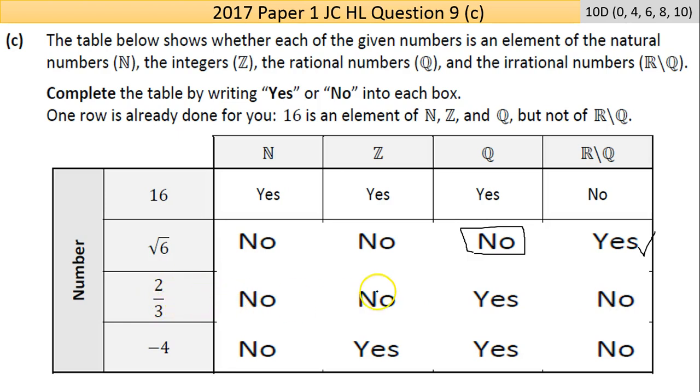Minus 4. Is it natural? No, it's negative. Is it an integer? Yes, because it's a whole number, positive or negative. Can it be expressed as a fraction? Yeah, minus 12 over 3 is one example. Is it irrational? No, because it doesn't repeat forever.